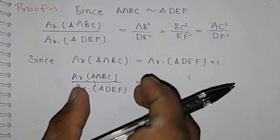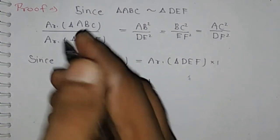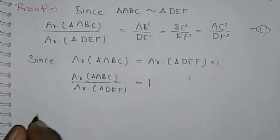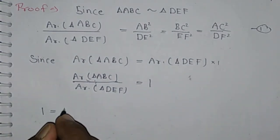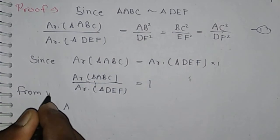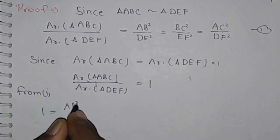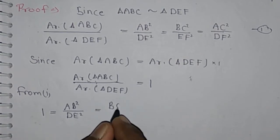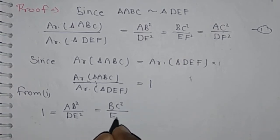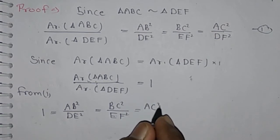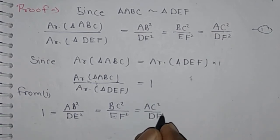Substituting the value of area(ABC) / area(DEF) = 1 into equation 1, we have: 1 = AB² / DE² = BC² / EF² = AC² / DF².